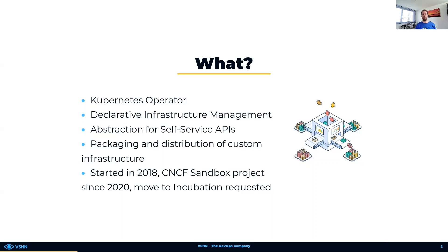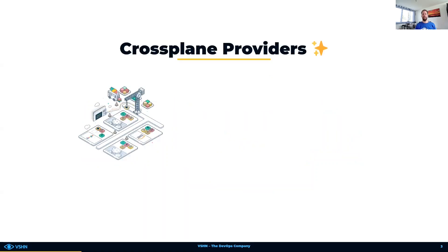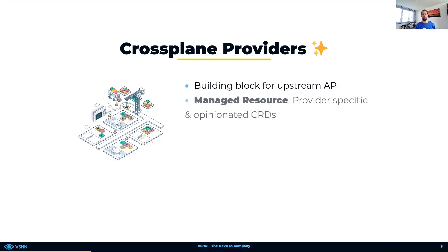There are a few key features, and I will introduce the three most important ones. Let's start with the Crossplane providers. They are the building blocks for talking to upstream APIs like AWS, Azure, Google Cloud, or even Helm. They provide an abstraction layer by bringing provider-specific custom resources with an opinionated structure.